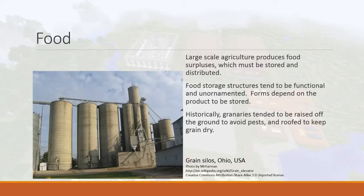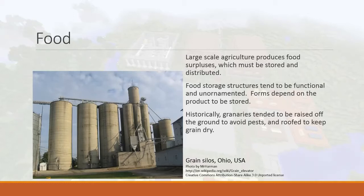In terms of the architecture surrounding food production, it's usually quite utilitarian. Here we have some grain silos in Ohio, USA — just cylinders of grain with a pump that drops grain in and pulls it back out. Historically, granaries would be raised off the ground to avoid pests like insects and animals. Food storage facilities are typically not that interesting to look at — they're very functional though.